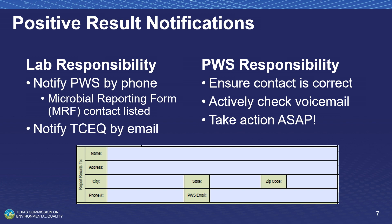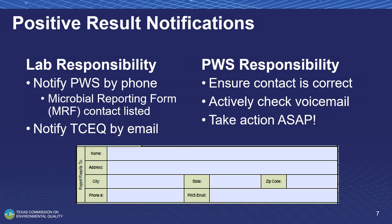After you drop your sample off, it would be the lab's responsibility to contact the public water system. That's why it's super important to have your contact information filled out on the MRF, because we have to have some way to notify you of a positive so you can resample and stay in compliance. The lab will also notify us, and if we see you're a smaller system that hasn't had a positive in a while, we'll reach out to provide guidance. If you haven't heard from your lab in 24 to 48 hours, follow up with them. Ultimately, it is the public water system's responsibility to follow up and take action.